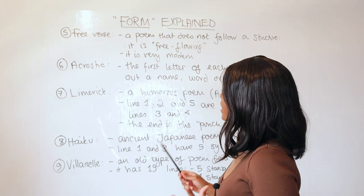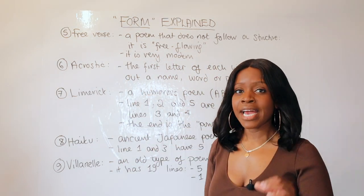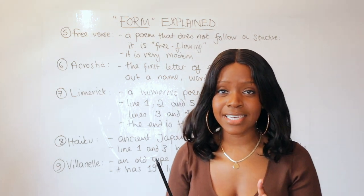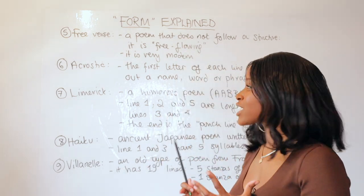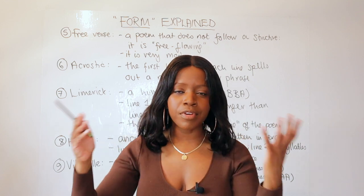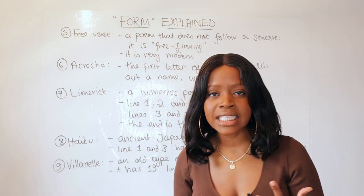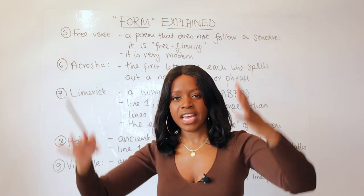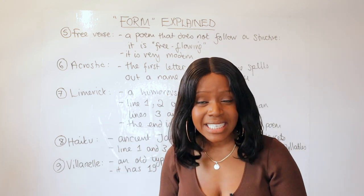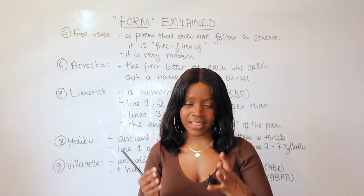Let's move on to the next type of form, which is free verse. Bear in mind that free verse is simply a poem that does not follow any set structure. It's actually very free-flowing. In other words, it can have however many numbers of stanzas, it can have one stanza that's fairly long or fairly short—it's not constrained by any type of pattern, any type of structure. That's why it's called free-flowing or free verse.